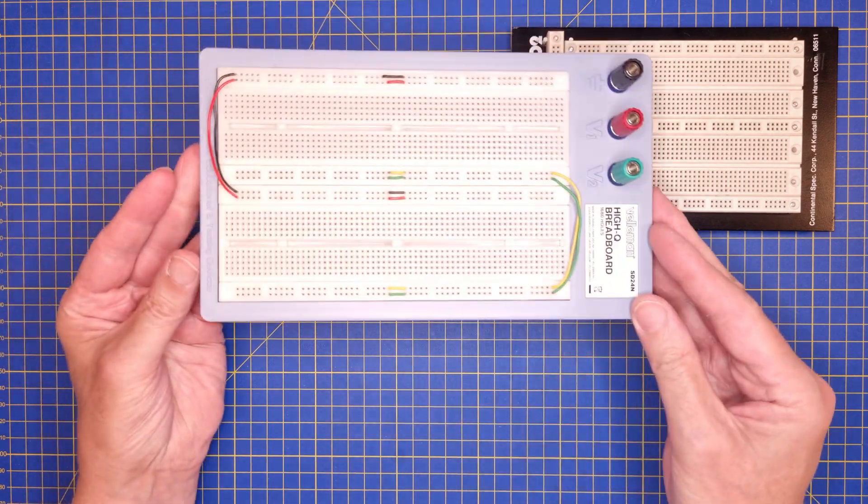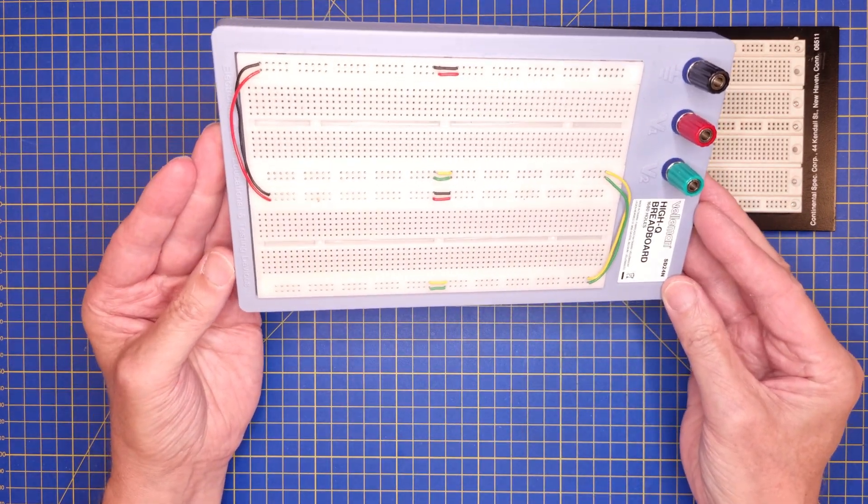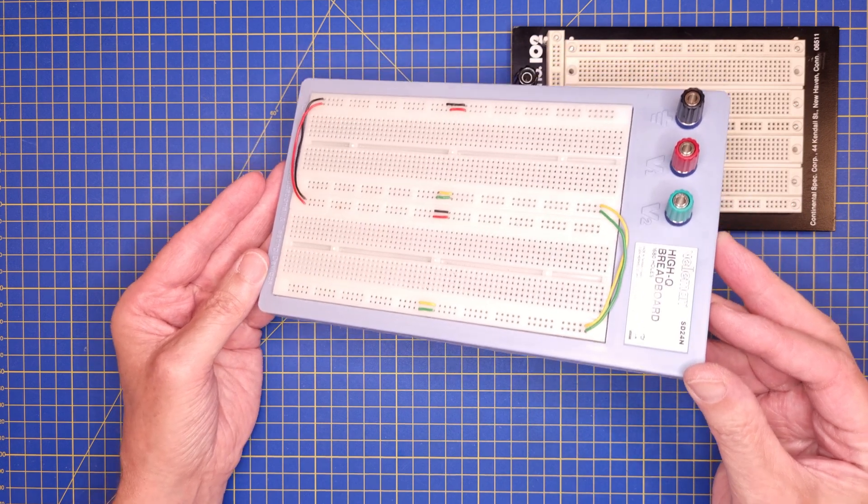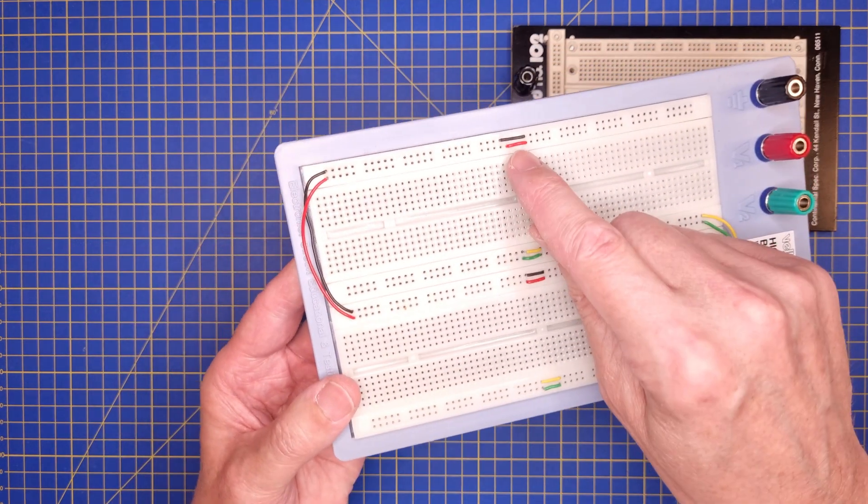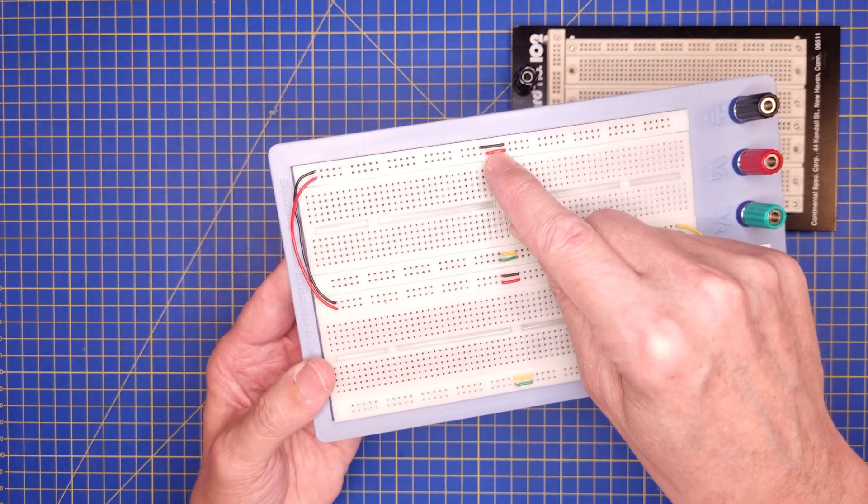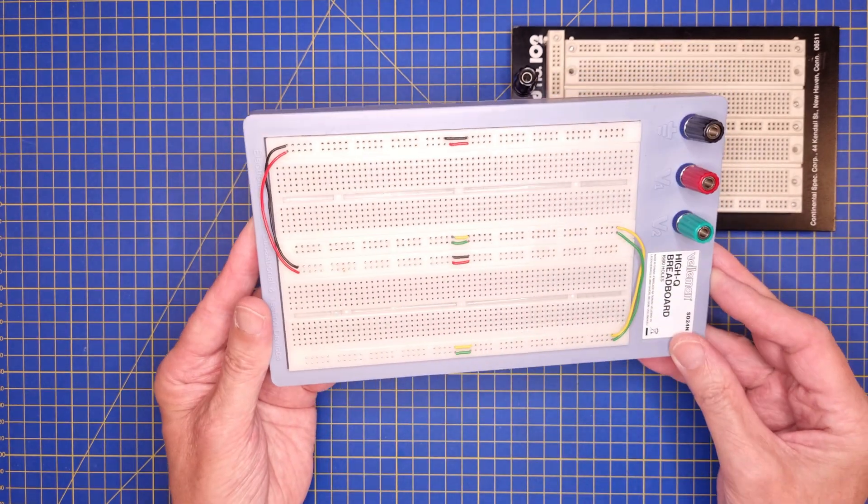This is a decent breadboard that isn't super expensive. The quality of the plastic and the connectors are much better than the cheap one. But you will need to bridge the power rails together with some wire since left and right side are isolated.